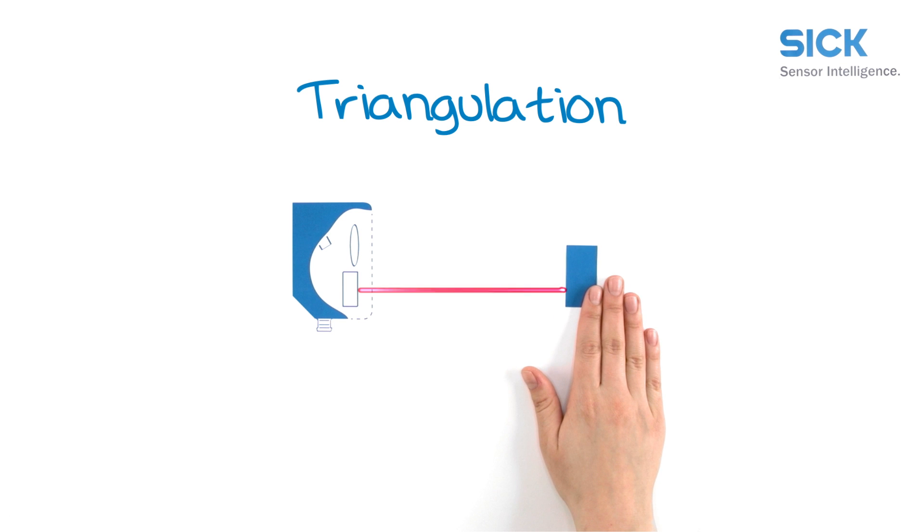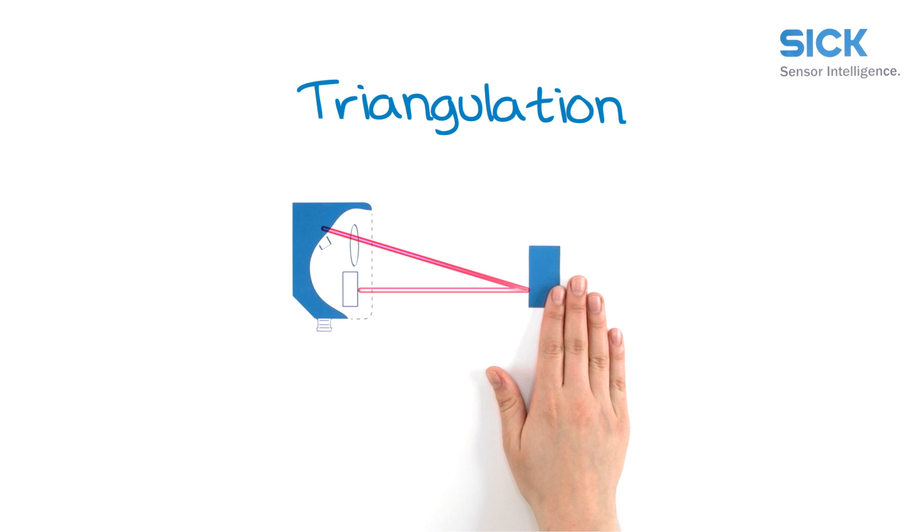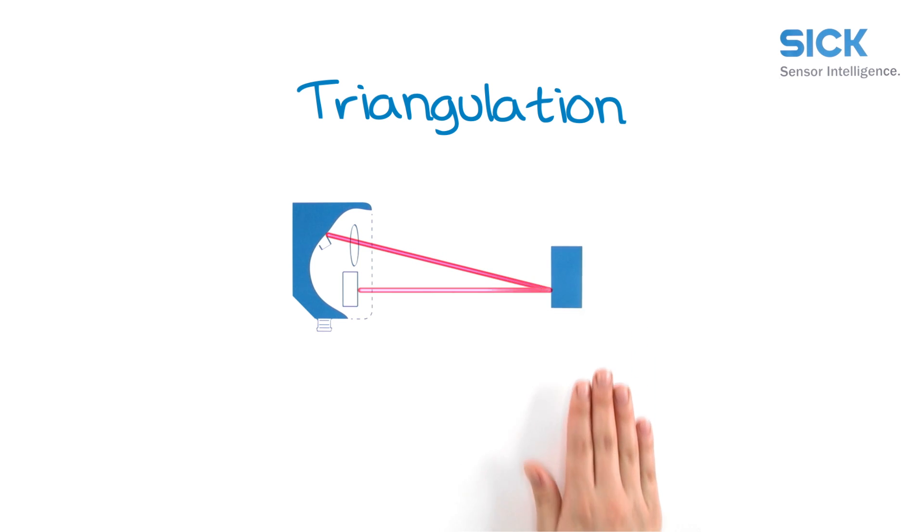To measure that change accurately, the sensor uses the triangulation principle. A point of light is projected onto the object to be measured. A lens focuses the reflected light and the light is captured by a light-sensitive receiver. Based on the angle between the send and receive direction, the position of the object is triangulated.